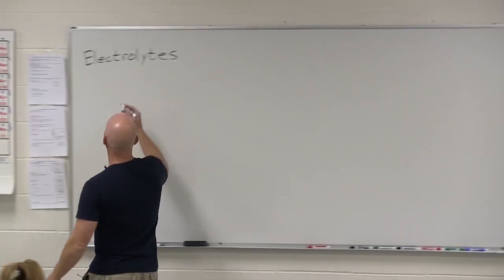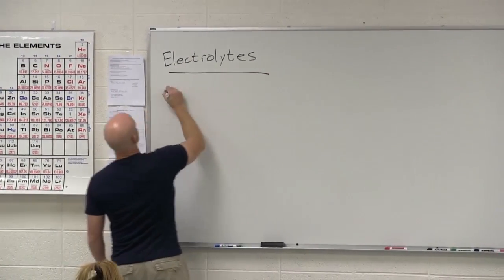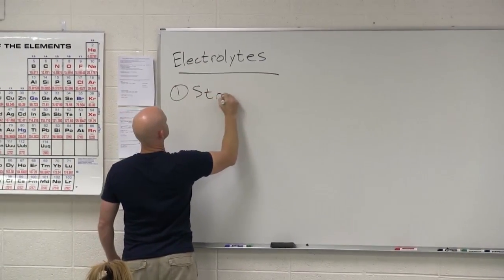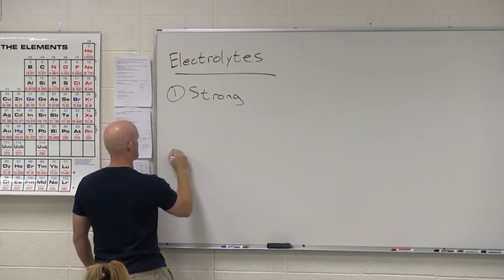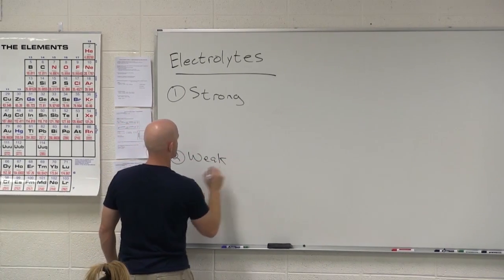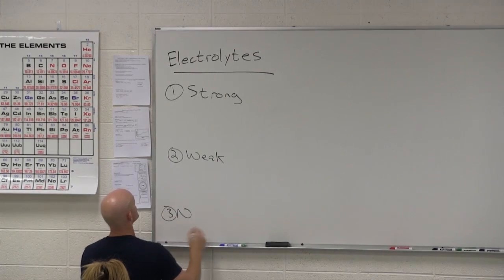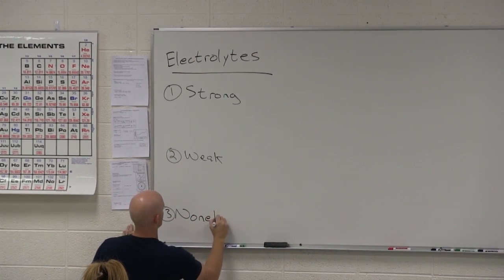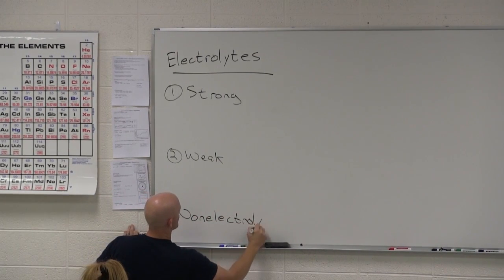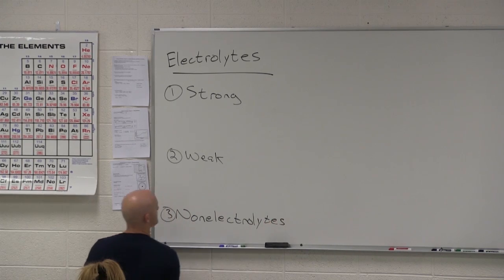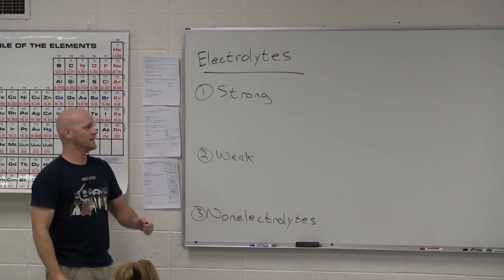So electrolytes come in a couple of different varieties. So the first we call strong. The second we call weak. And then finally, with things like sugar, which I'll put three here, as non-electrolyte. So it's definitely not a class of electrolytes. It's the exact opposite. But that's where we sound like sugar. We'll come back to that in just a little bit.